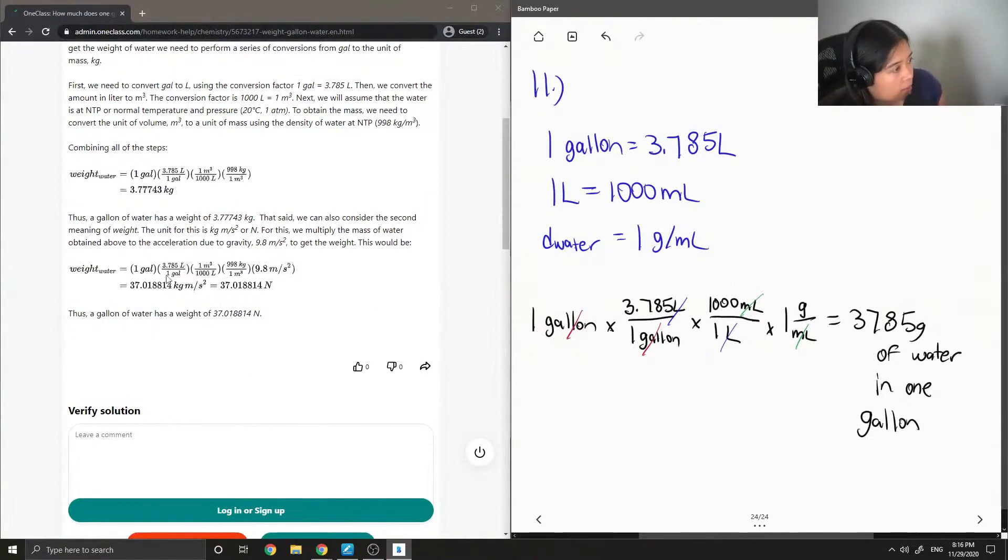Thus, a gallon of water has a weight of 3.77743 kilograms.